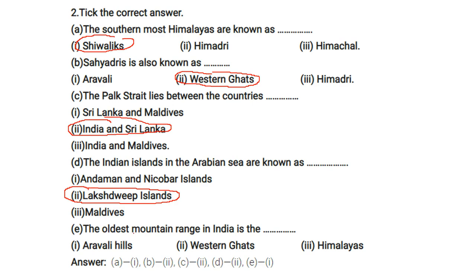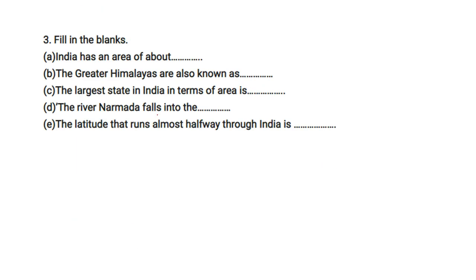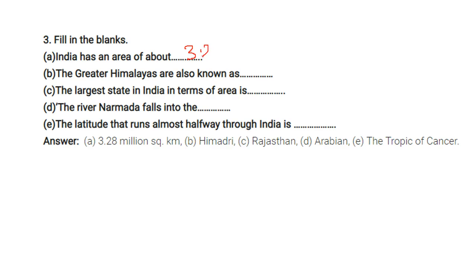The oldest mountain range in India is the Aravalli Hills. India has an area of about 3.28 million square kilometers, or 32.8 lakh square kilometers. The Great Himalayas are known as Himadri. The largest state in India in terms of area is Rajasthan. The river Narmada falls into the Arabian Sea. The latitude that runs almost halfway through India is the Tropic of Cancer.